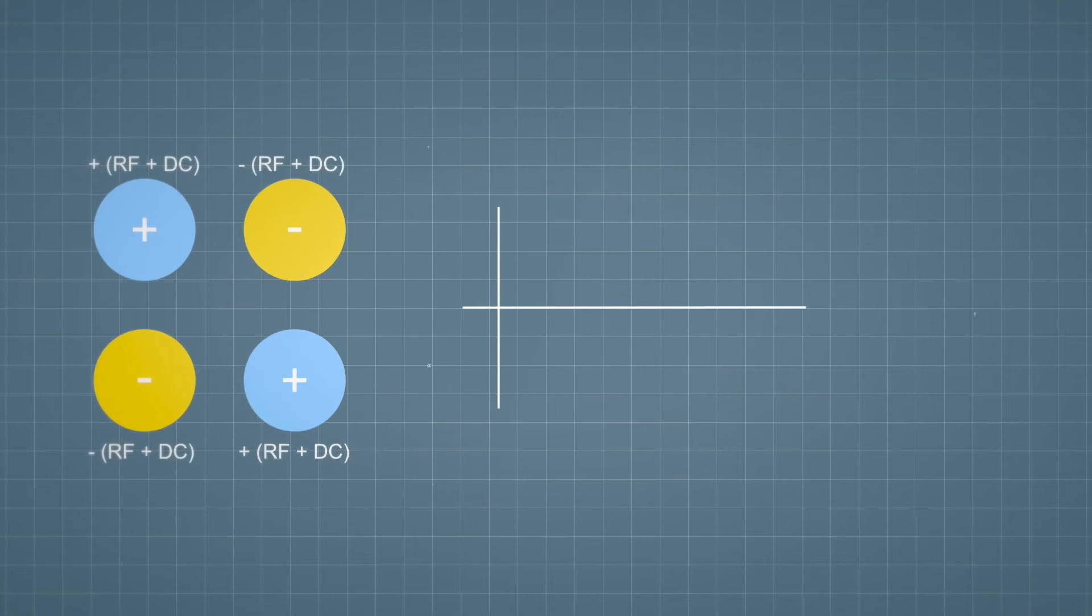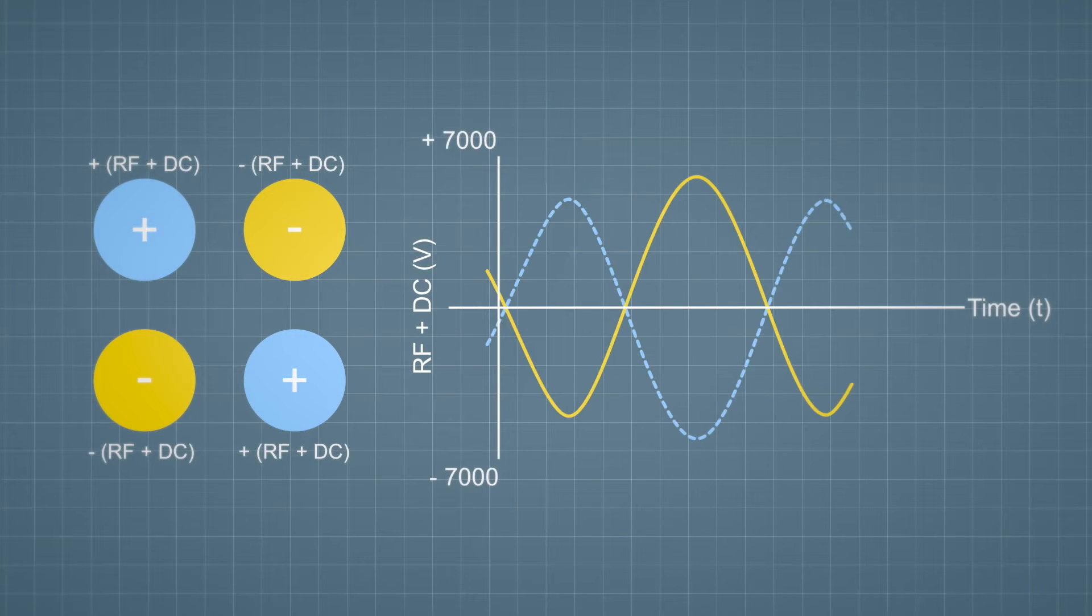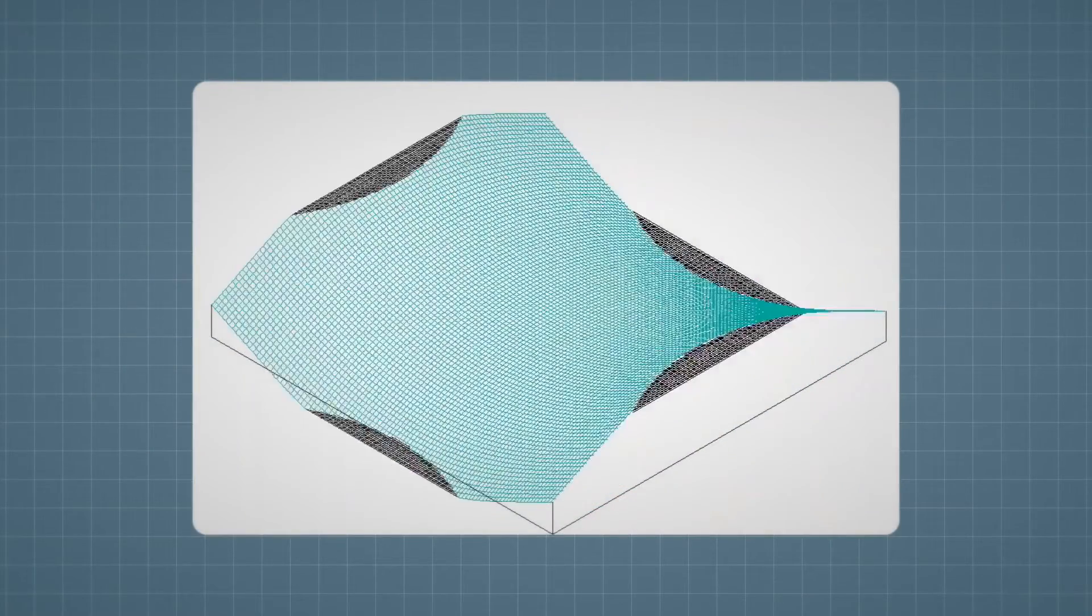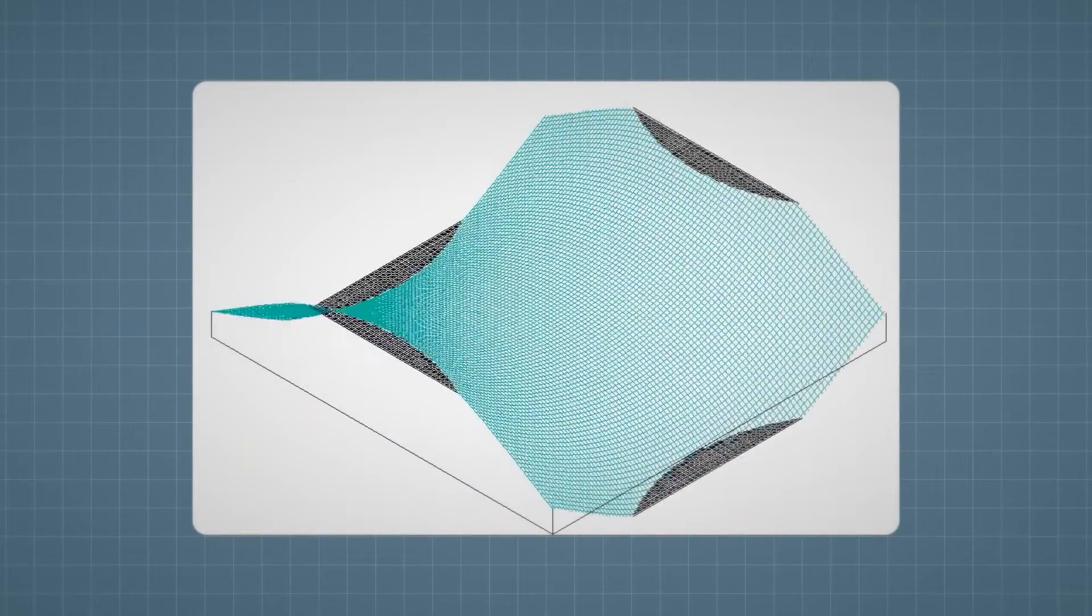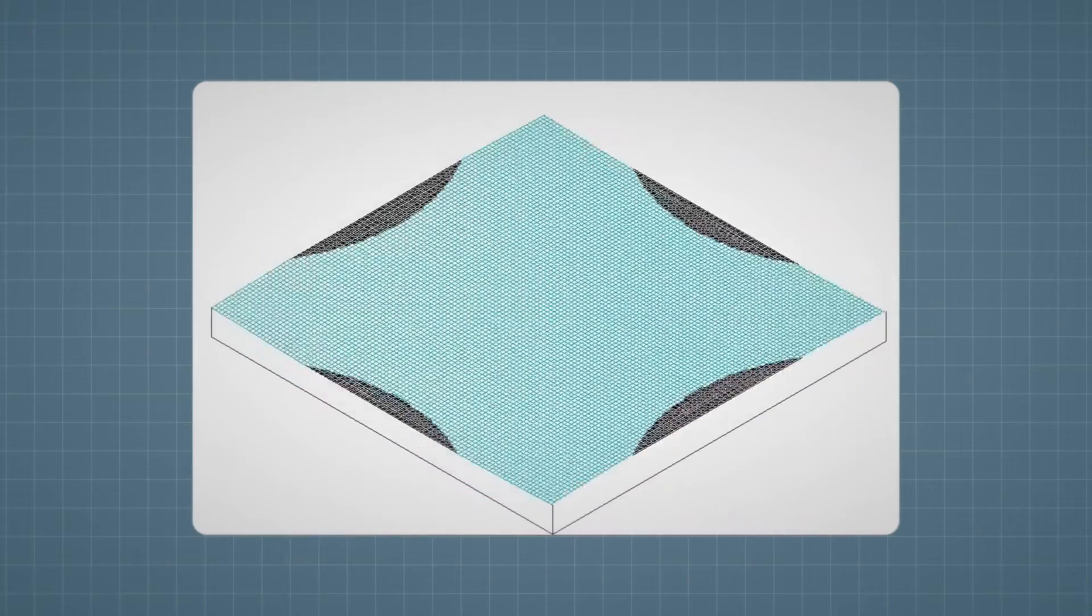Static potentials, or DC voltages, and alternating potentials, or RF voltages, are applied to the quadrupole rods, with one pair of rods having the opposite polarity to the other pair. These voltages create a fluctuating electric field between the rods. The field oscillates, as shown, typically at frequencies of approximately 1 MHz.